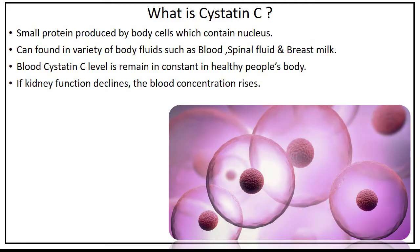Cystatin C is a small protein produced by all nucleated cells. It is produced and destroyed at a constant rate and is found in a variety of body fluids such as blood, spinal fluid, and breast milk. In healthy people, blood concentrations of Cystatin C remain relatively constant throughout life. If kidney function declines, the blood concentration rises.